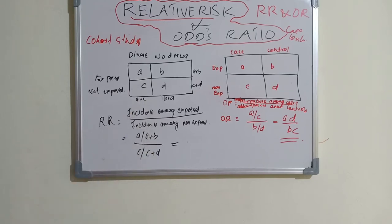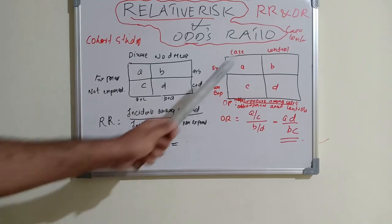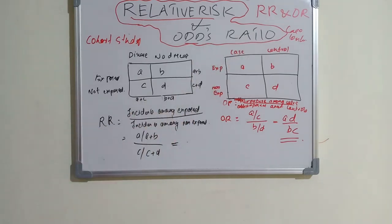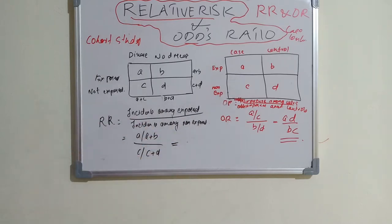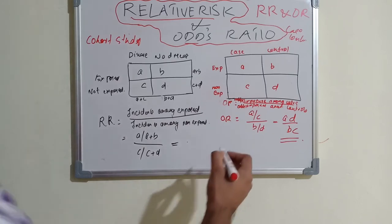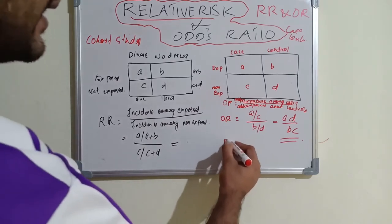In a case-control study, there is no incidence — incidence means new cases, but this is a prevalent study where cases are already present. What we are checking here is the exposure rate.